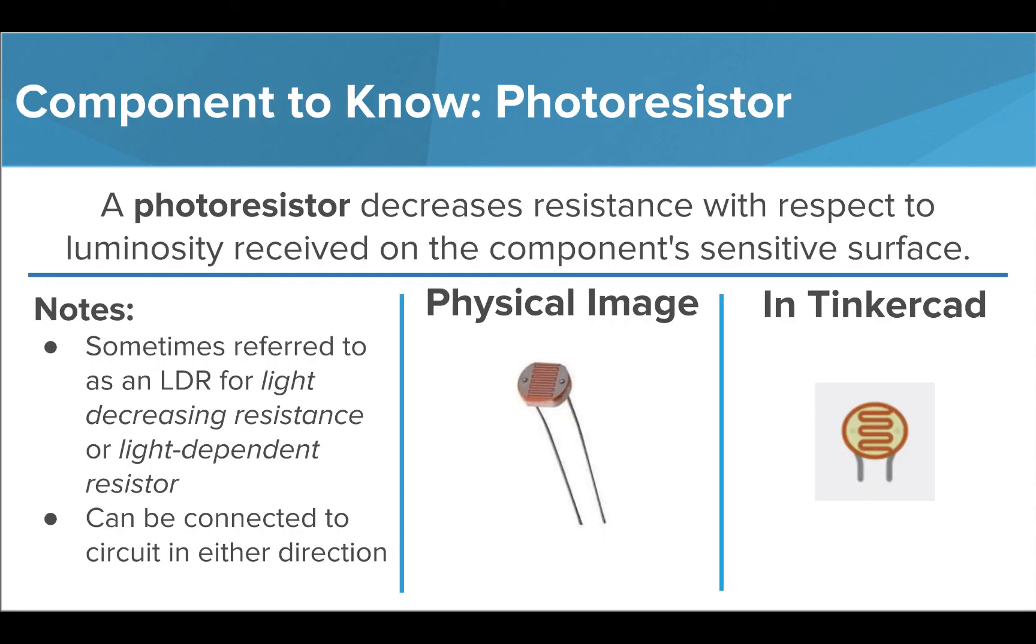During your next exploration, you'll be using two new sensors. The first is a photo resistor, which decreases resistance with respect to the luminosity received on the sensitive surface of the component, which means we can use this sensor to measure the amount of light in an environment. The sensor can be connected to your circuit in either direction.